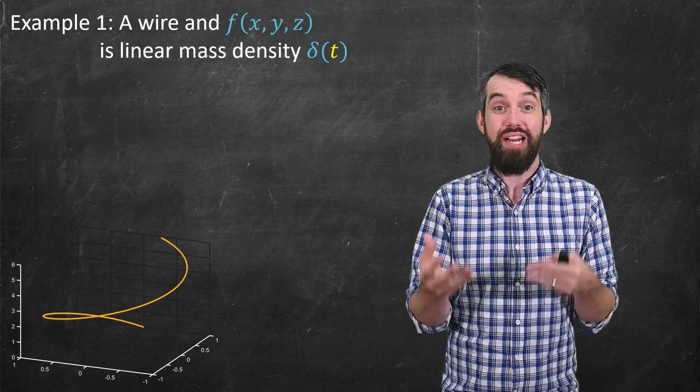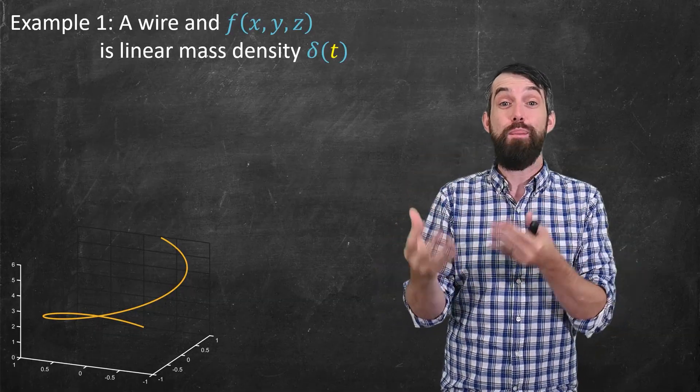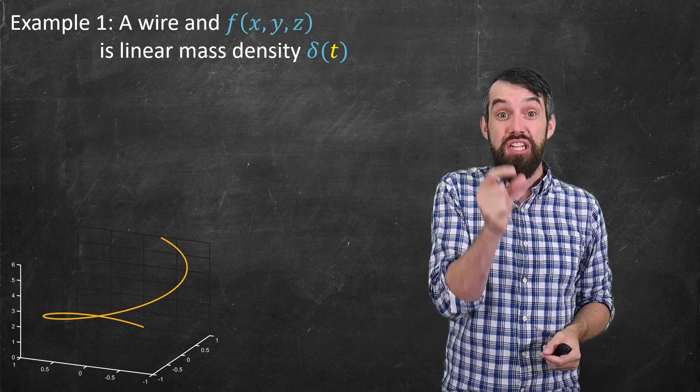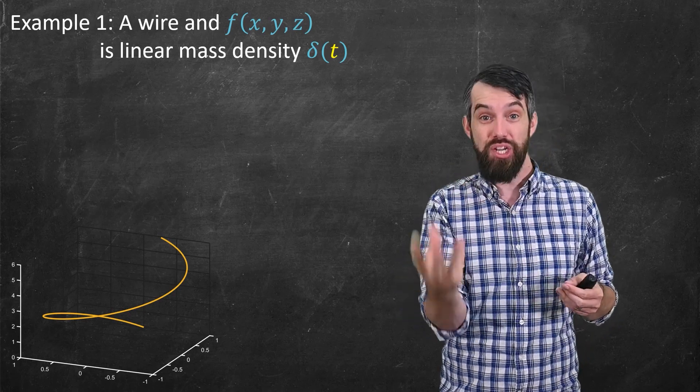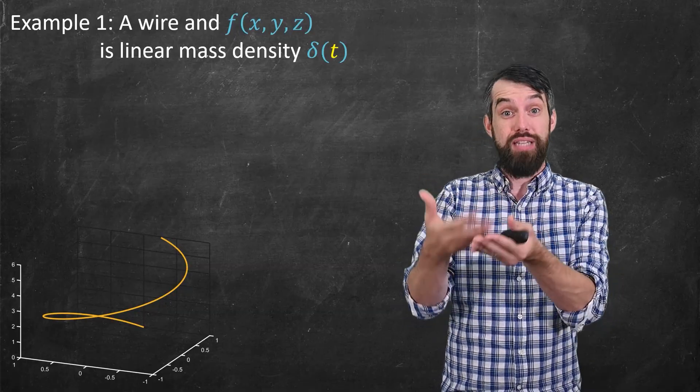And everywhere along the wire, it's got a certain what we'll call linear mass density. So maybe every centimeter of the wire has a different density, maybe made of different materials, or perhaps it's a little bit thicker in some spots than other spots. Either way, different linear densities.